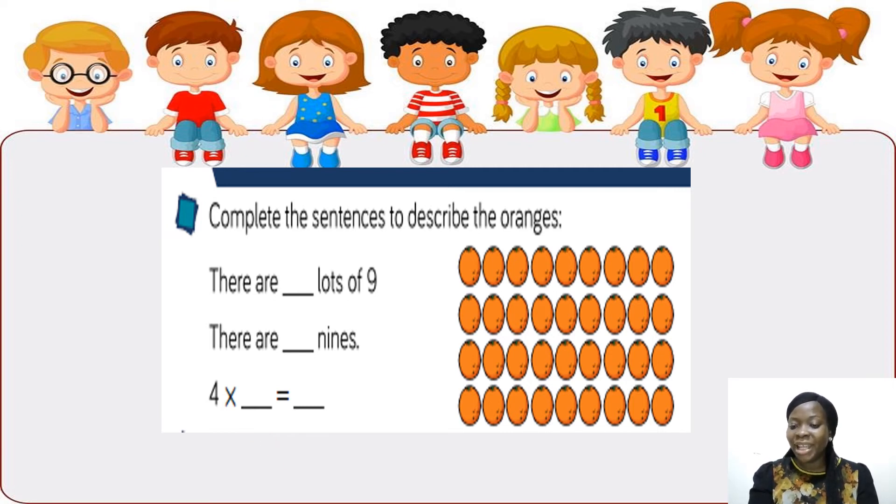Welcome back. Let's see if your answers were correct. There are how many lots of 9? 1, 2, 3, 4. There are 4 lots of 9. So I am going to write 4 over here. There are how many 9's? 1, 2, 3, 4. There are 4 nines. So 4 times 9 equals what? 36.